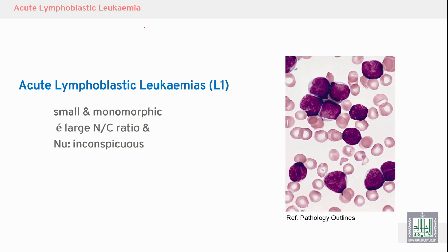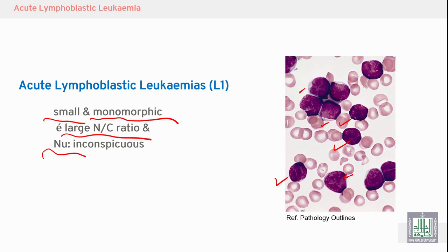The FAB classification divides ALL into L1, L2, and L3. L1 features small, monomorphic cells — most cells in the film are similar to each other. Most cells are small with a very high nuclear-to-cytoplasm ratio: only a thin rim of cytoplasm is visible while the remainder is nucleus. The nuclei are large and nucleoli are inconspicuous — not prominent.